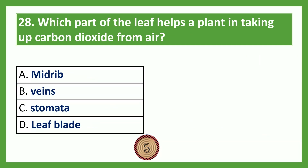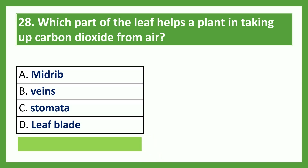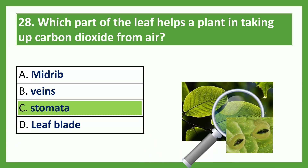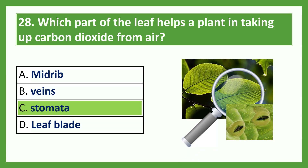Which part of the leaf helps the plant in taking up carbon dioxide from air? Option A: midriff; Option B: veins; Option C: stomata; Option D: leaf plate. The answer is stomata. In the picture, we can see that leaves have small openings called stomata that help in the exchange of gases.